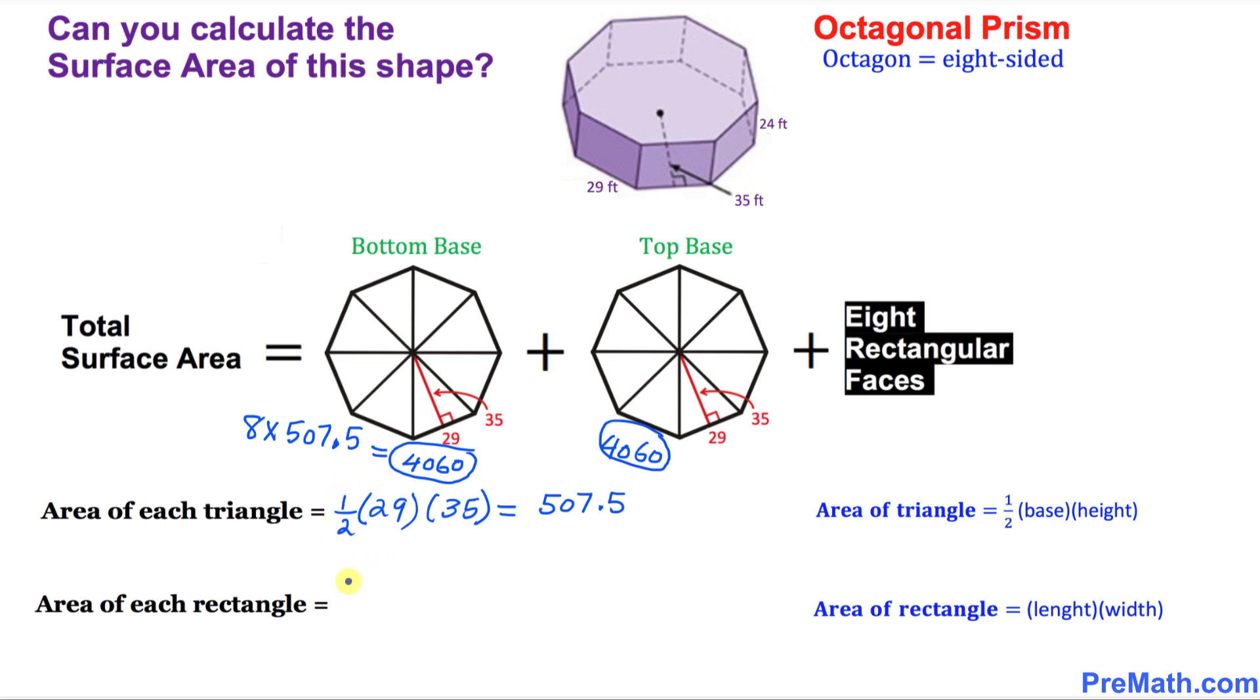So let's go ahead and multiply this out. Use that formula. I am going to put down 29 times 24 to get the area of each individual rectangle. If you multiply this, that is going to give you 696. You have to be very careful with these calculations. So each individual rectangle has area 696. Since we have eight of them, multiply 8 times 696. And that is going to give you 5568. So this is the total area of these eight rectangular faces.